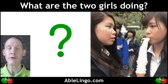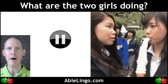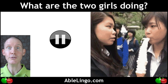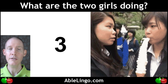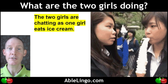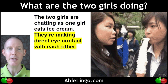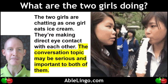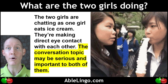Next question: what are the two girls doing? Your turn to pause the video and come up with your answer — or multiple answers. My answer: the two girls are chatting as one girl eats ice cream. They're making direct eye contact with each other. The conversation topic may be serious and important to both of them.